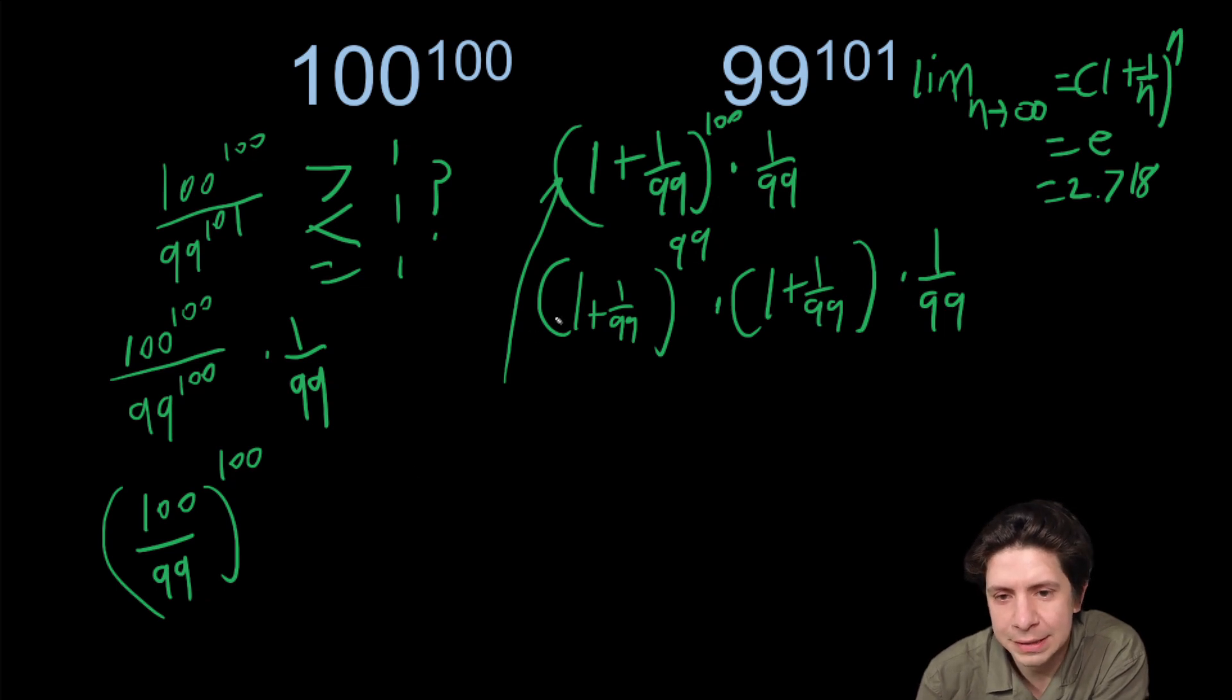Okay, so this has to be less than 2.8. So this is less than 2.8, but it's going to be more than 2. This is going to be more than 1. It's going to be 100 over 99.